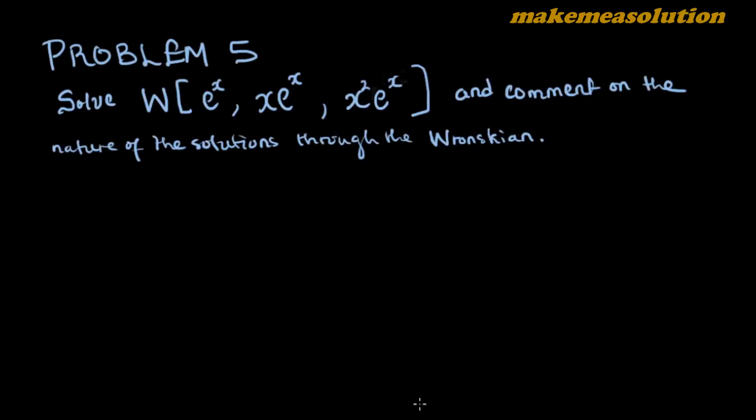Welcome to problem five. We are to find the Wronskian for e^x, xe^x, and x²e^x, then comment on the nature of these three solutions through the output of the Wronskian. We are going to begin, but first I want to teach you something.